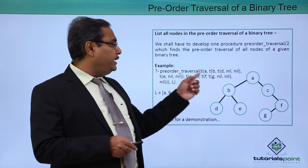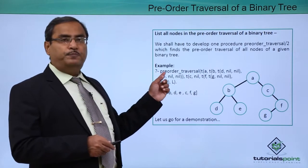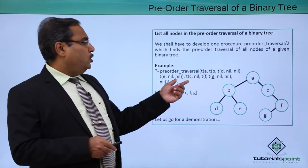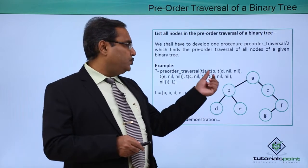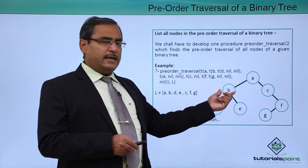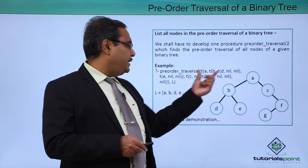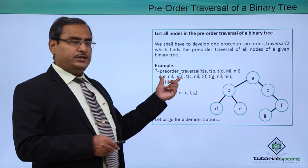If we give this binary tree as input to this pre-order underscore traversal procedure, you can find this A is the root. B is having the left child. B is having D and E, D and E are the left child and right child.